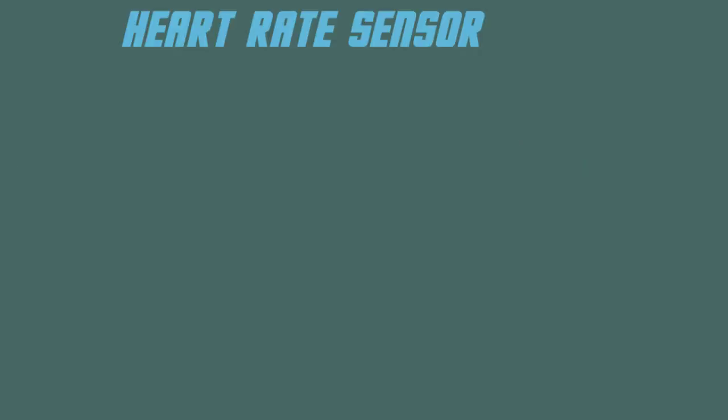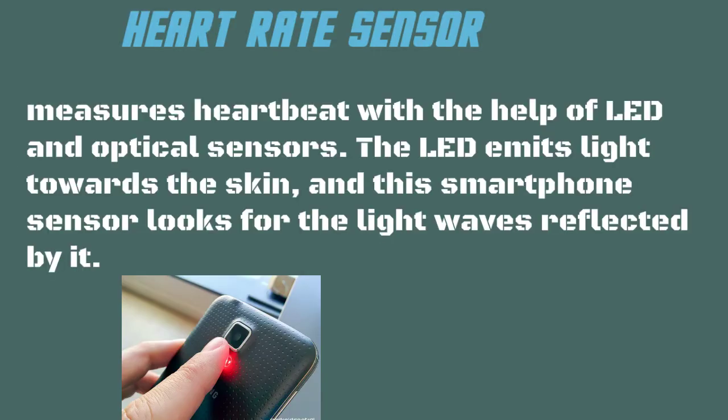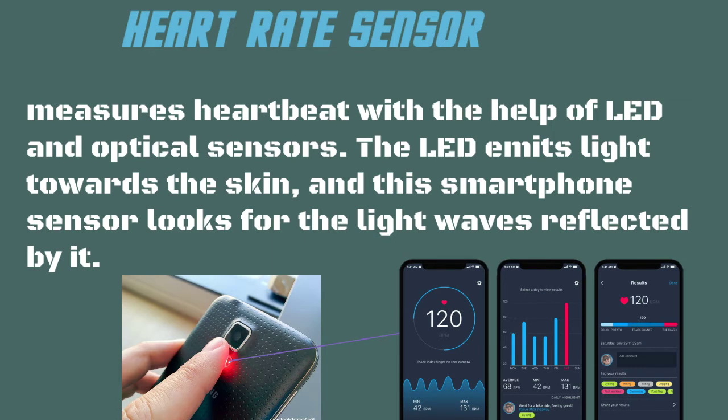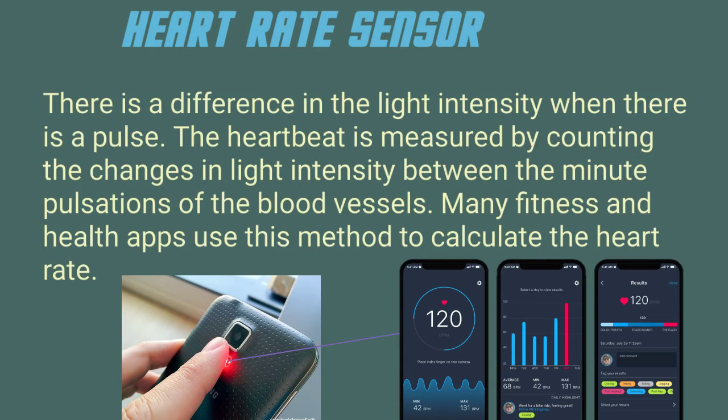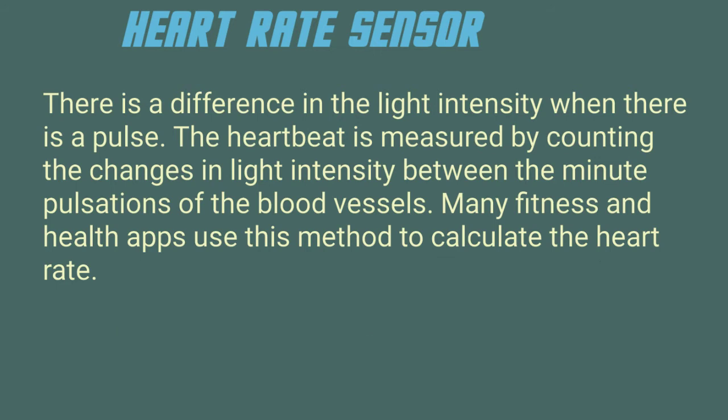Heart Rate Sensor measures heartbeats with the help of LED and optical sensors. The LED emits light towards the skin, and this sensor looks for the light waves reflected by it. There is a difference in light intensity when there is a pulse. The heartbeat is measured by counting the changes in light intensity between the minute pulsations of the blood vessels. Many fitness and health apps use this method to calculate the heart rate.